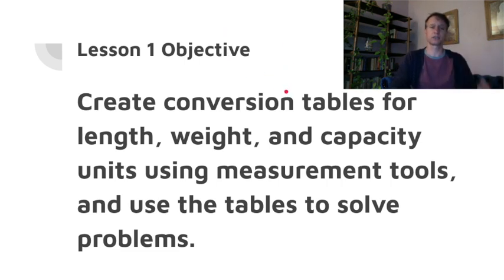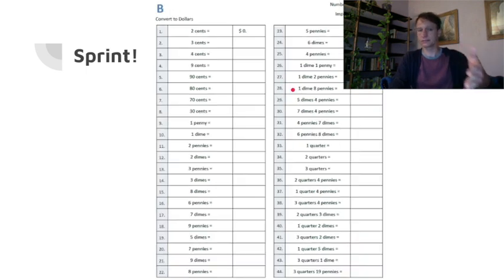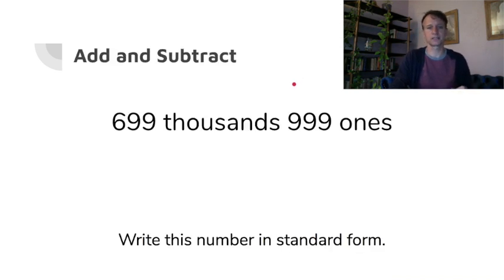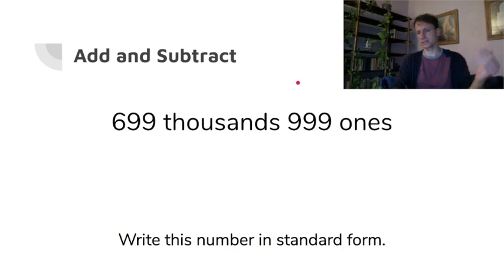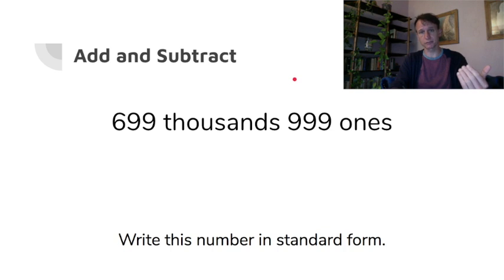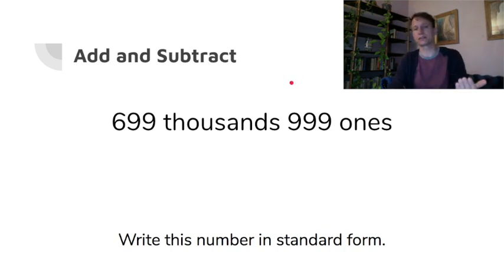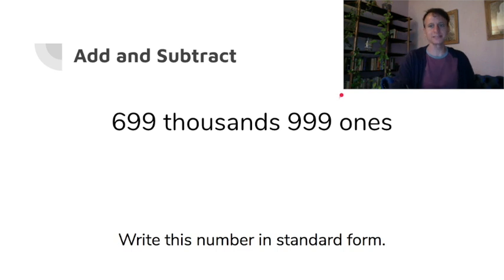There is a sprint for this lesson — go ahead and do it. Working with money again, which is always lots of fun with addition and subtraction. If you're watching this video you can pause, or if you're watching in some other format you can just write them down including the answers and then go back and do the math yourself at your convenience. We have six hundred ninety-nine thousand nine hundred ninety-nine ones written in standard form.